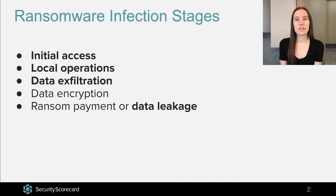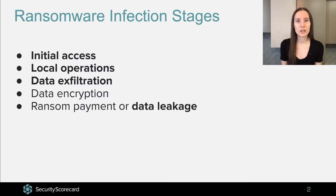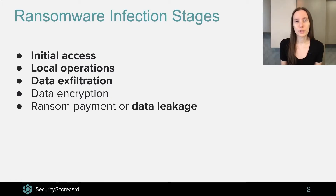After this, the attacker starts to gather and exfiltrate the data that he finds in that environment. Only after performing these three steps does the attacker encrypt the data and show the victim a message requesting payment of a ransom, threatening to expose the exfiltrated data if the ransom is not paid. For the purpose of our presentation — which is to ensure that the last two steps do not happen — we are mostly interested in how ransomware threat actors perform in the first three stages.